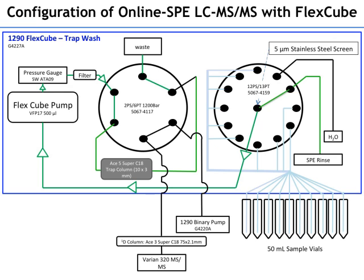We've found that it's really important with these varied water samples to have a five-micron stainless steel mesh screen positioned at the center port of this valve — basically between the sample and the FlexCube pump. Without that screen, when we centrifuge the samples, some low-density material like toilet paper residue from wastewater effluent doesn't centrifuge well, and we don't use a filter because then we have losses in filtration. So it's important that it's a screen, not a porous filter — porous filters have too much flow restriction. The five-micron mesh size seems to work pretty well.